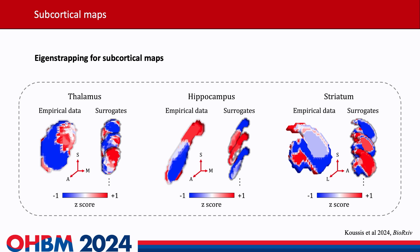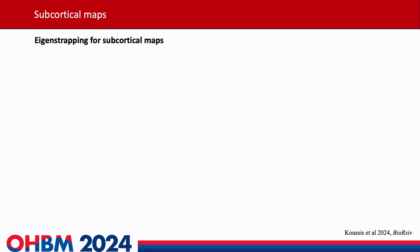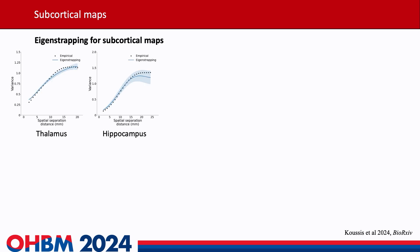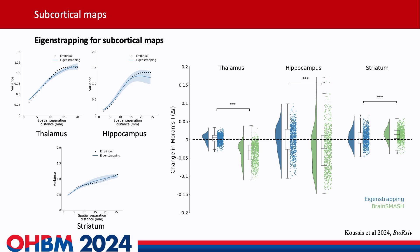We show eigenstrapping surrogates of the cortical-subcortical gradients generated from HCP resting state data. Despite these very different structures and hence very different modes, we found that eigenstrap maps had the same smoothness while permuting the data. We also show that Moran's I, a global measure of smoothness, is retained much more significantly with eigenstrapping than with brain smash.